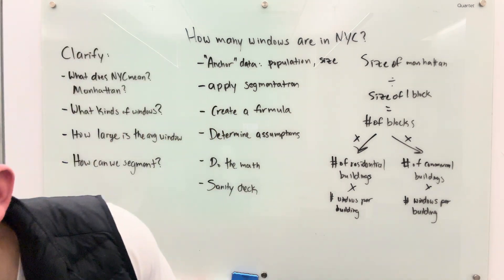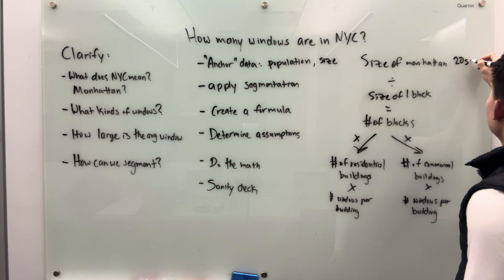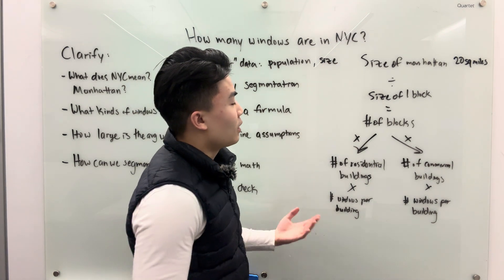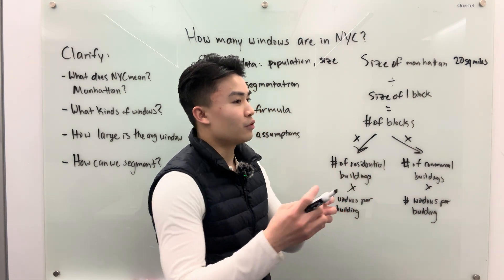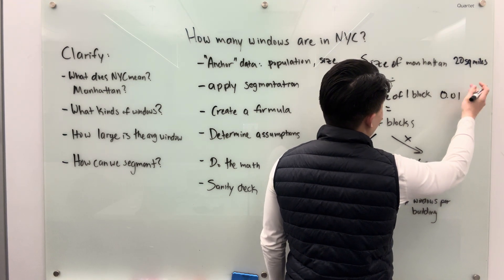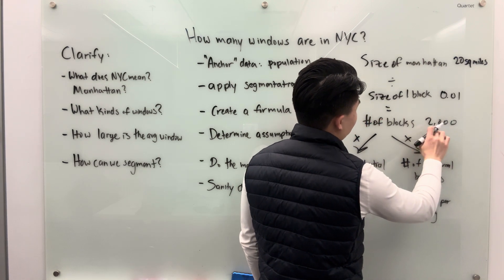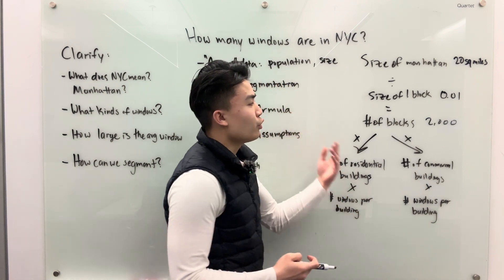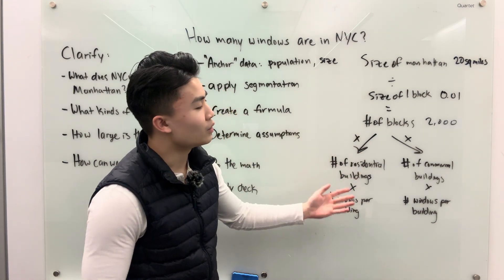Let's say I asked the interviewer for information on the size of Manhattan, and they tell me that Manhattan is roughly 20 square miles large. Now I'm going to apply an assumption to the size of one block. Based on my experience — I live in New York City and have walked these blocks before — obviously midtown blocks are going to be bigger versus downtown where blocks are smaller. But on average, the size of a block is probably about 1% of a square mile. What that means is that on average the number of blocks in New York City is going to be 2,000. You want to walk your interviewer through the math as you do it, or alternatively ask for a couple seconds to do the math first and then walk them through the entire thing once you've gotten the solution.